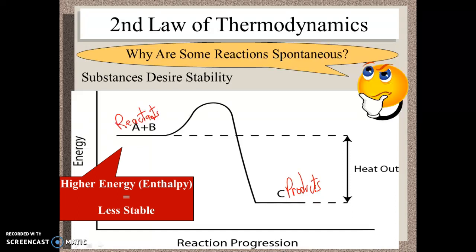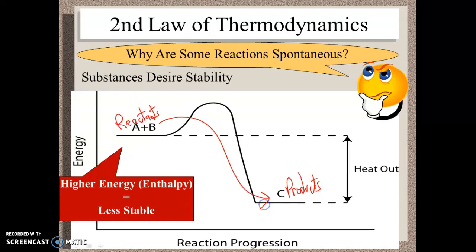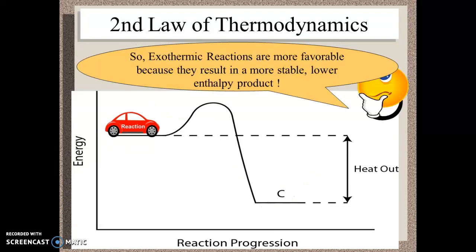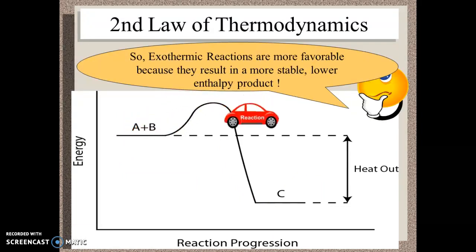Because the reactants have higher energy and higher enthalpy, they're actually less stable, and so they react. We end up with products which are lower in energy and enthalpy, which means we've ended up with something that's more stable. So it makes sense that exothermic reactions tend to be favorable because we end up with things that are more stable.